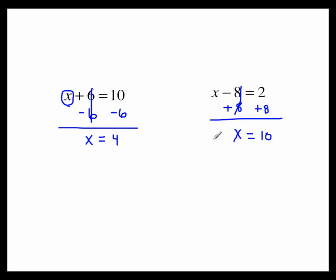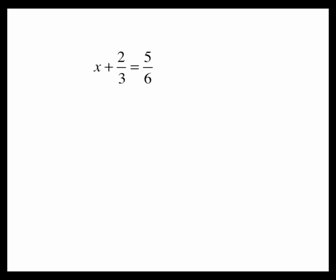That process is the same process we will follow when we start having some fractions. This equation still says X plus something. To undo that adding, we do the opposite, which is subtracting. It just so happens what we're subtracting is a fraction. So subtract 2 thirds from both sides. Draw your line. The 2 thirds and the negative 2 thirds cancel. You have X alone.